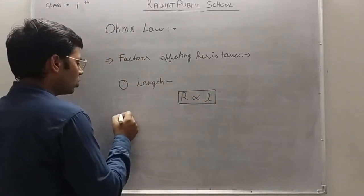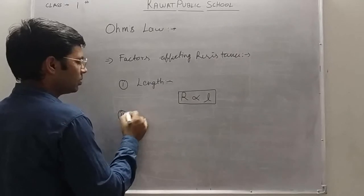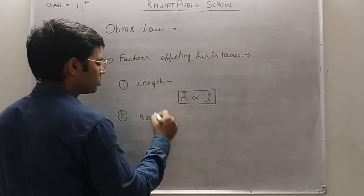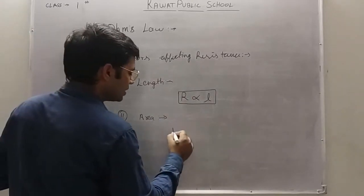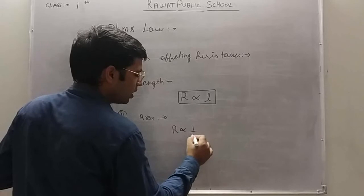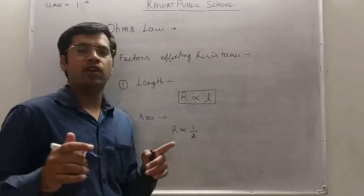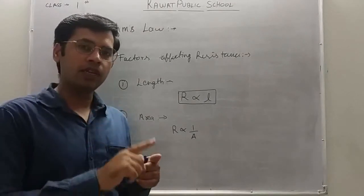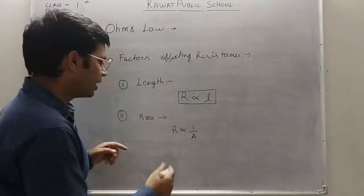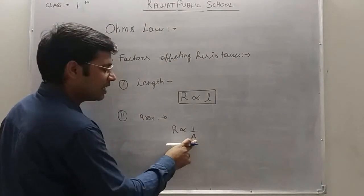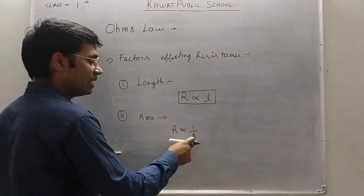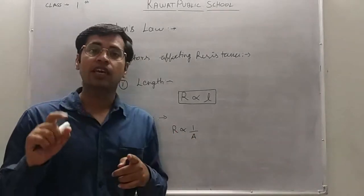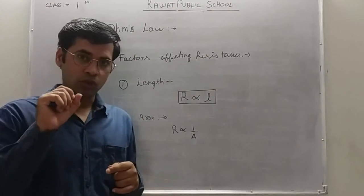The second factor on which resistance depends is area — specifically the cross-sectional area of the conductor. Resistance is inversely proportional to area. When we increase the cross-sectional area, resistance decreases. When we decrease the cross-sectional area, resistance increases. So resistance is inversely proportional to area.